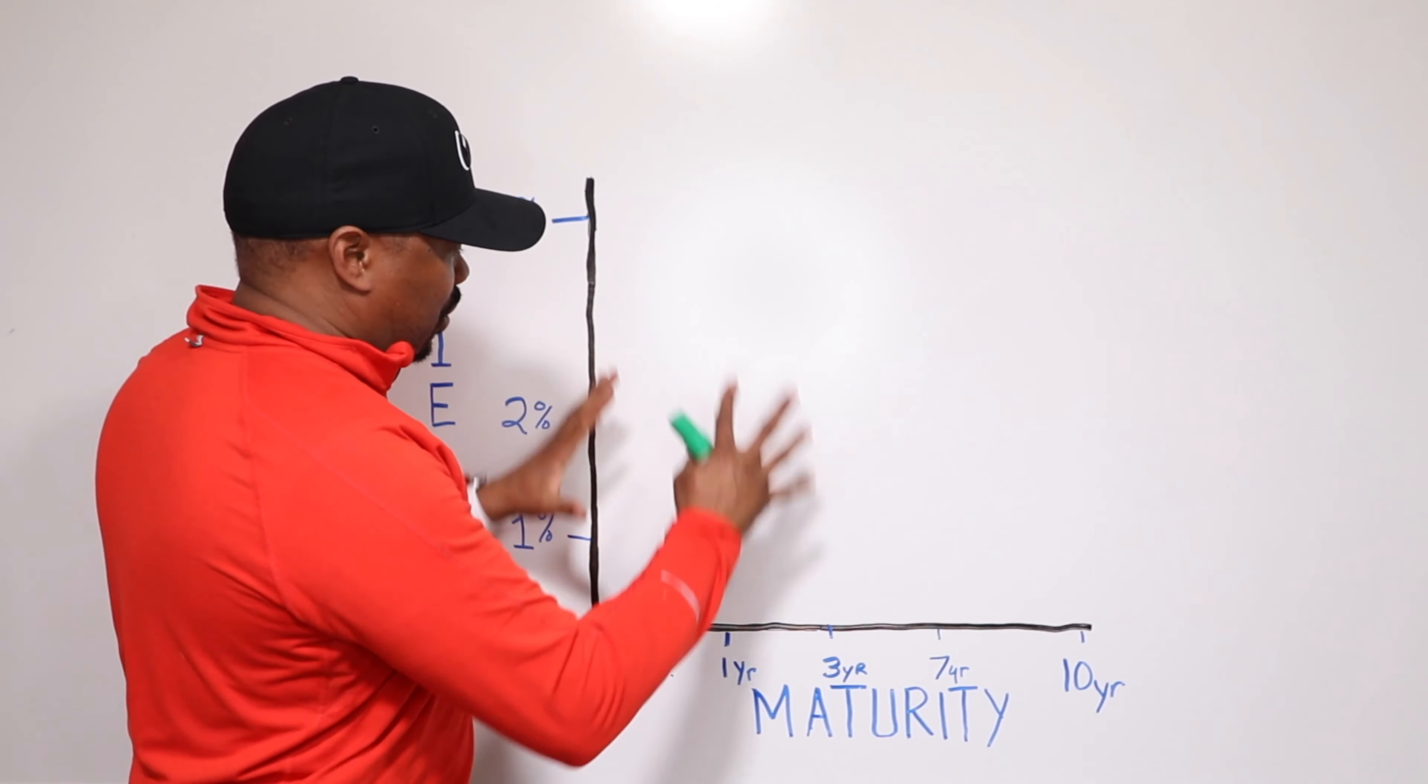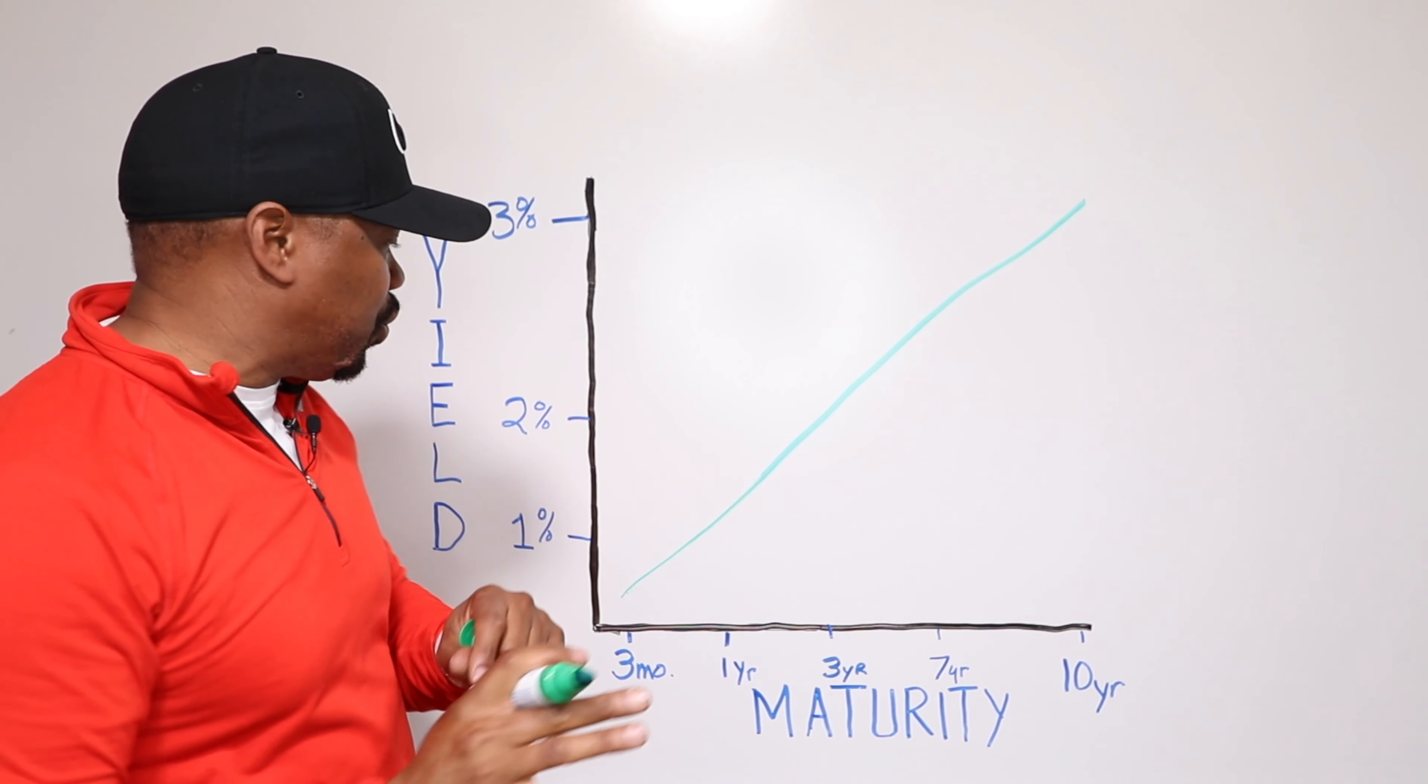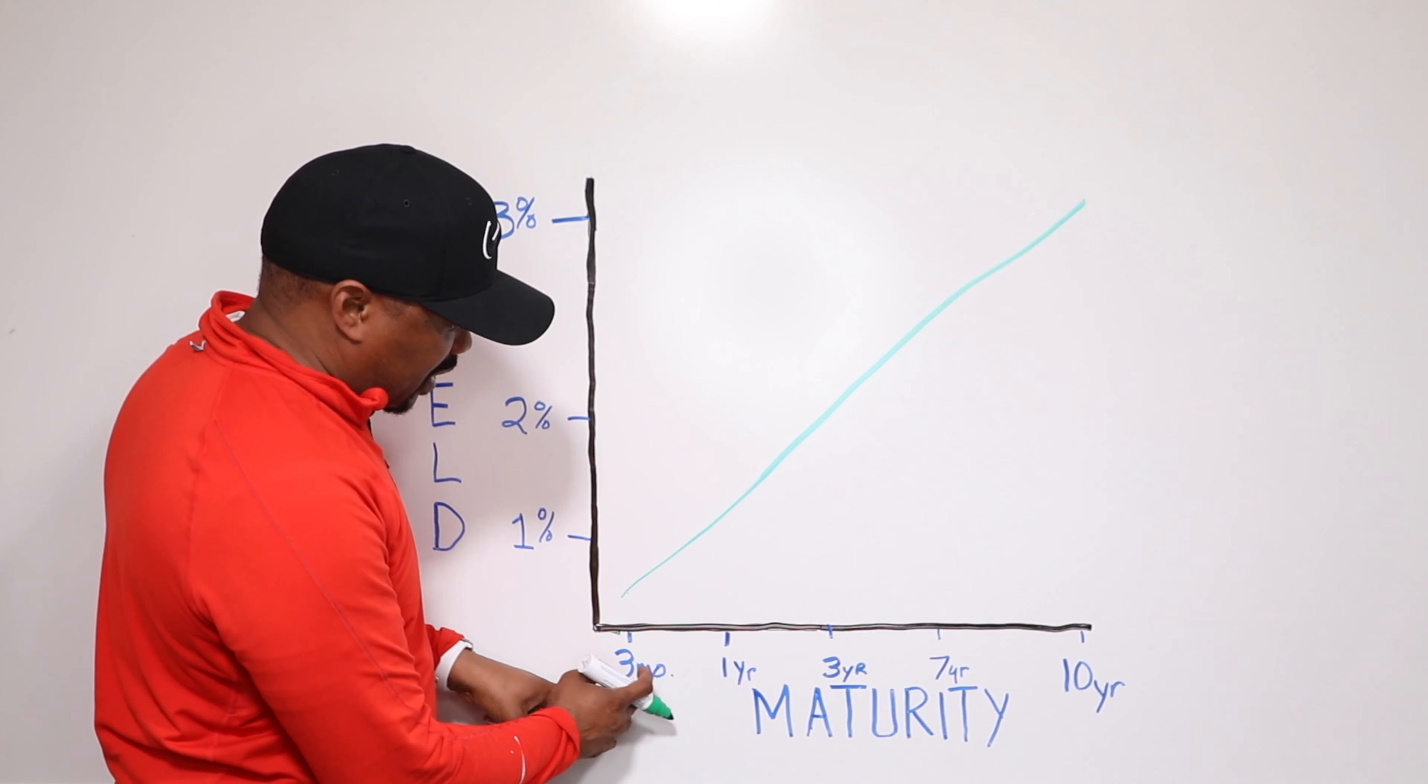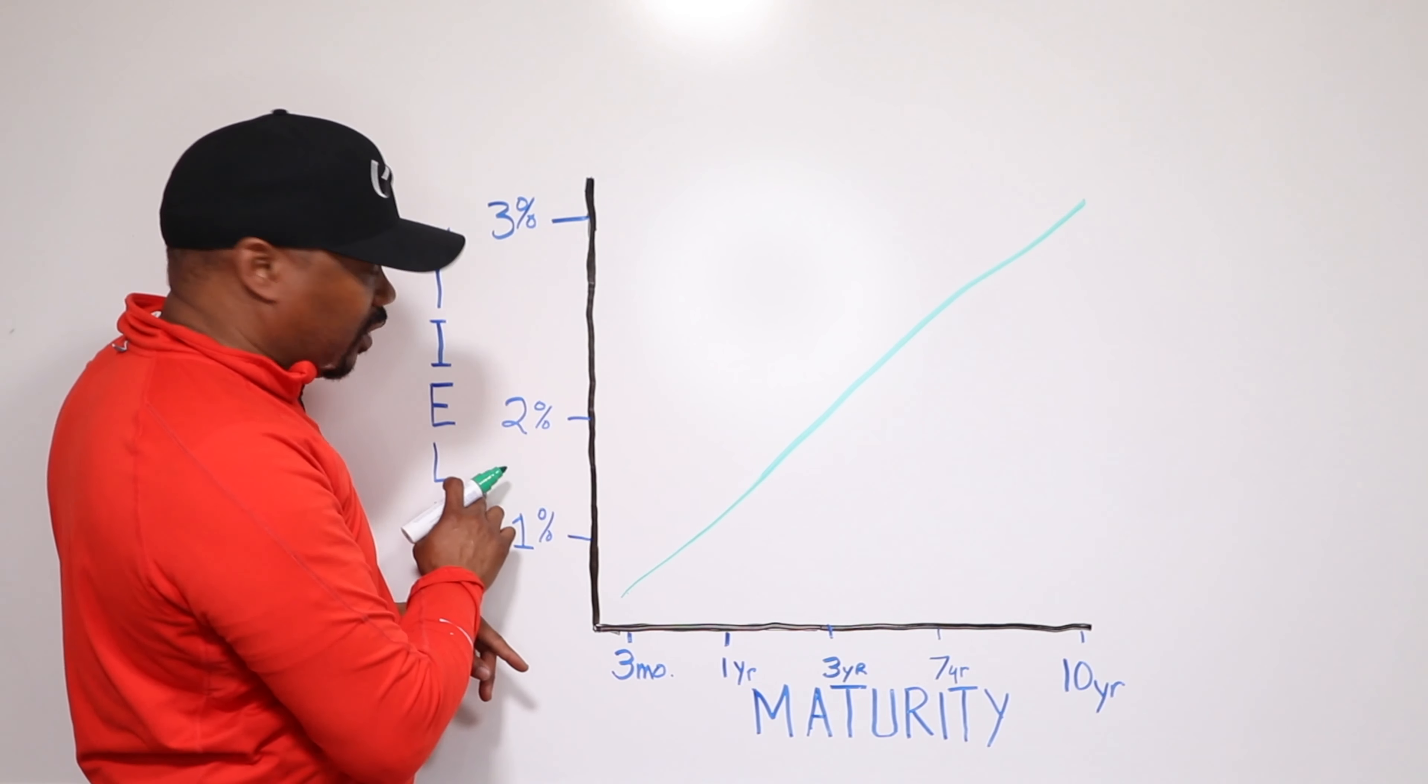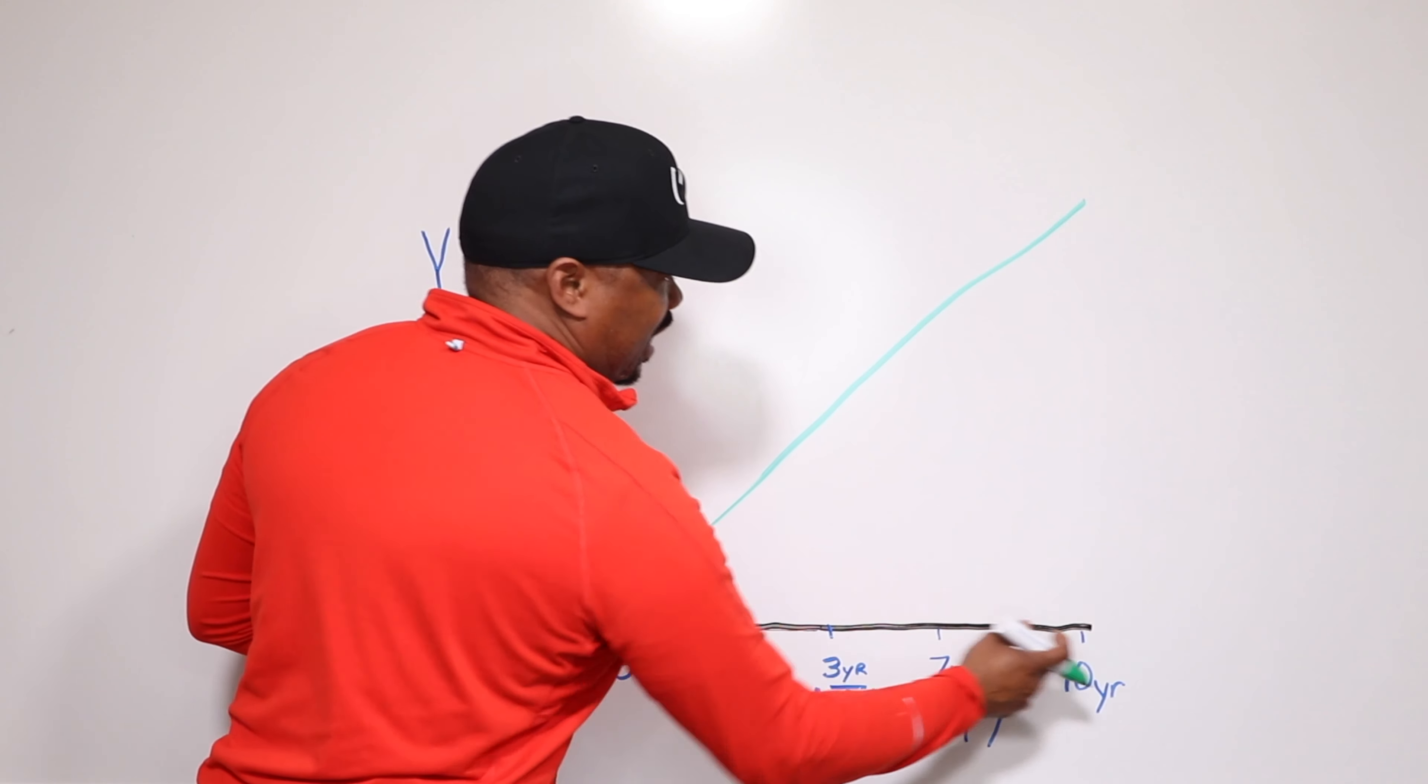So to understand this, what I want to do is give you what a typical yield curve looks like. A typical yield curve looks like this. Now I'm using a flat line yield curve to indicate this. It's the simplest way to show this. But as you can see, the shorter the term of the T-bill, the lower the yield.